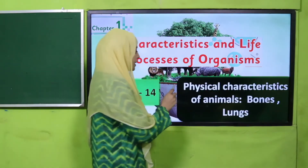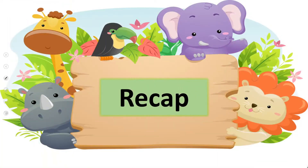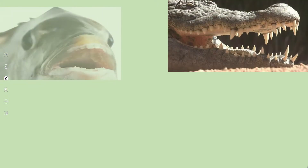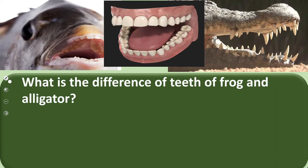The lecture is about physical characteristics. We are already studying about that — in the previous lecture we discussed about teeth. Today we will discuss about bones and lungs of animals. Let's quickly recap what we did in the previous lecture. Listen to the questions very carefully and then answer. This is an alligator and this is a fish, and these are human teeth.